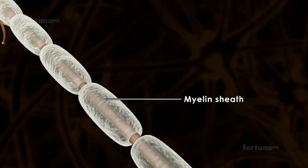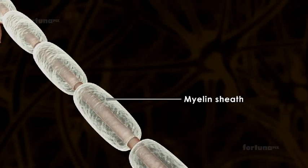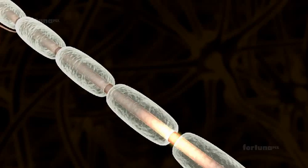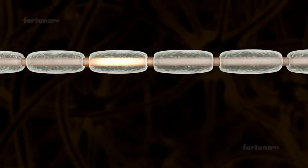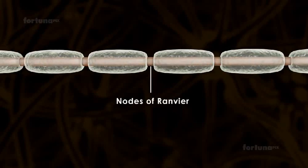The sheath serves to insulate the axon. However, it is not continuous along its length. There are many gaps known as the nodes of Ranvier.